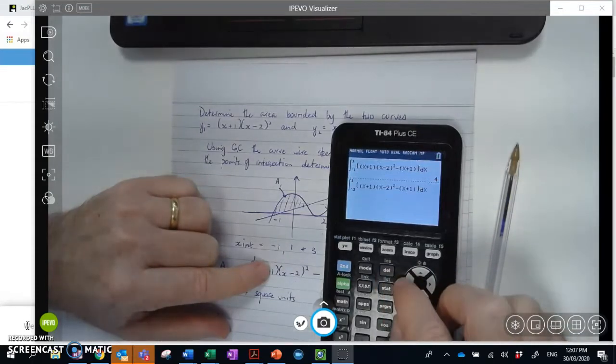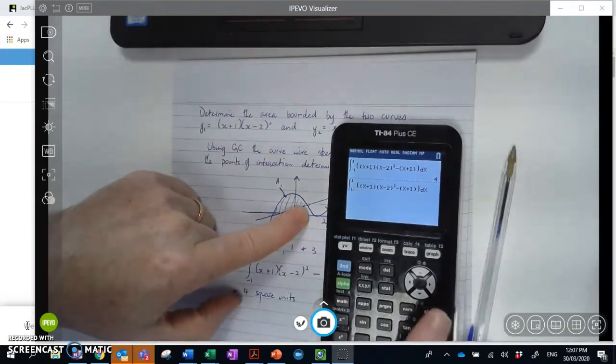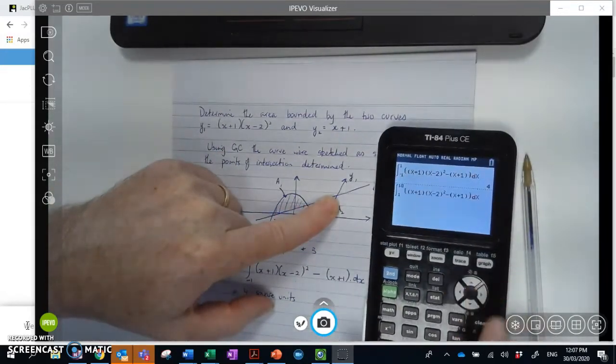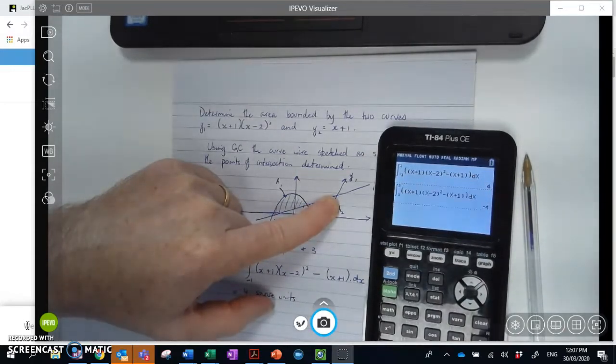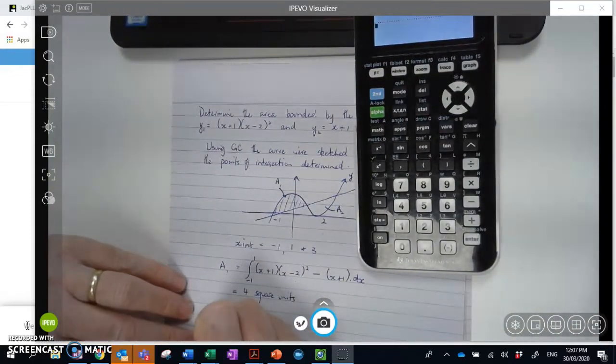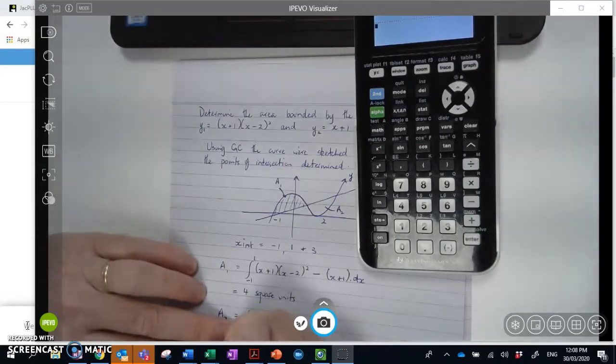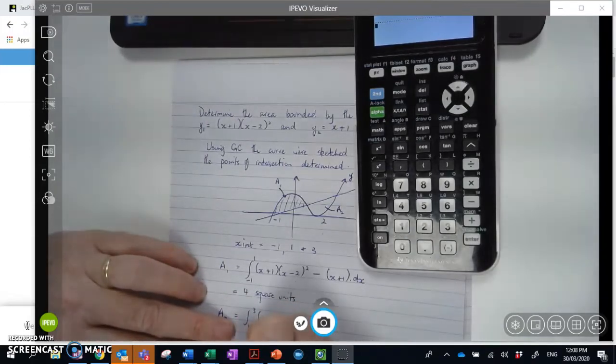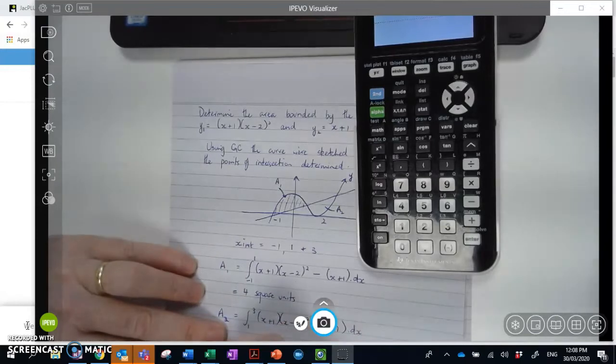And this time my bounds will be... Let's see if I can delete that without deleting the whole thing. My bounds will be from 1 here through to 3 there. And then you can see that the area is the same, but this time...